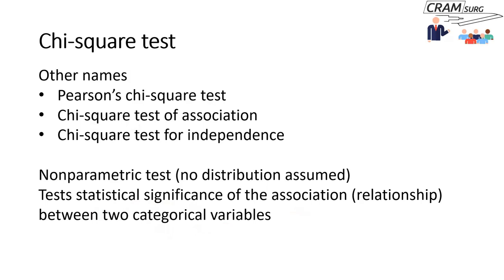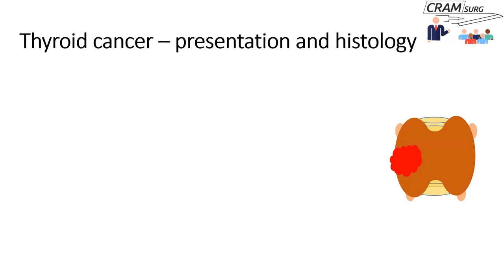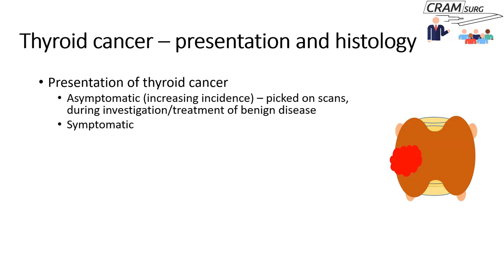Categorical variables are data grouped into categories — qualitative data types, not measurement, continuous, or quantitative data. I'm going to use thyroid cancer as an example. You could divide thyroid cancer patients' presentation into asymptomatic or symptomatic groups. We know that asymptomatic thyroid cancer is on the increase — we see patients where cancer has been picked up on scans done for unrelated conditions, or during investigation of benign disease such as Graves' disease or multinodular goitre. We also have the category of symptomatic patients presenting with a lump, dysphagia, or breathing problems.